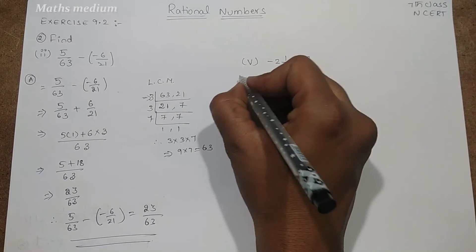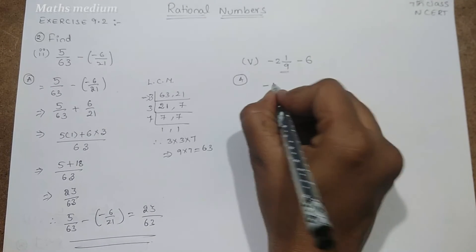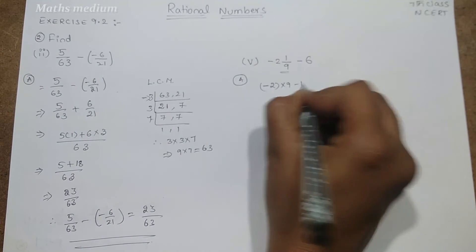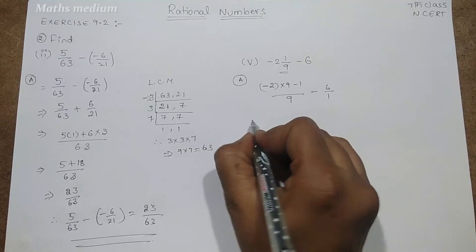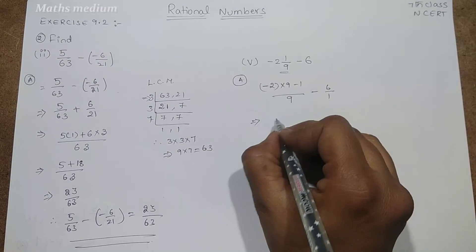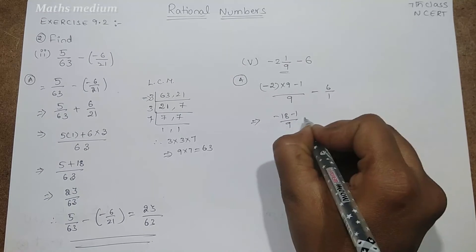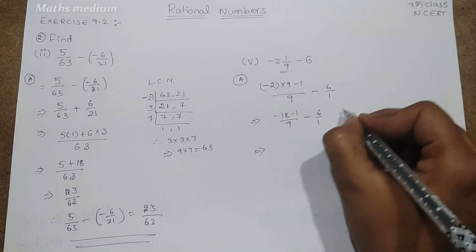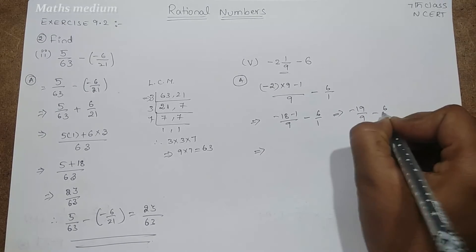Similarly, this is also in mixed fraction. So we have to convert minus 2 into 2 into 9 minus 1 by 9 minus 6 by 1. Now here see minus 19 by 9 minus 6 by 1.